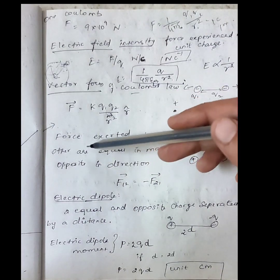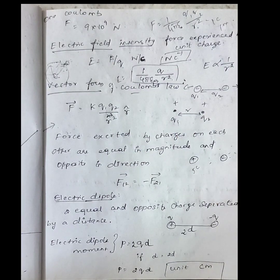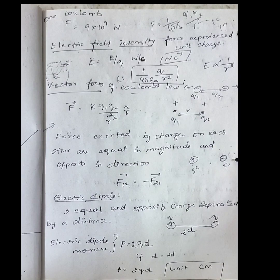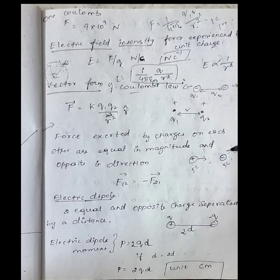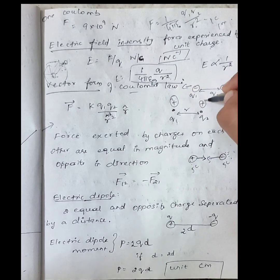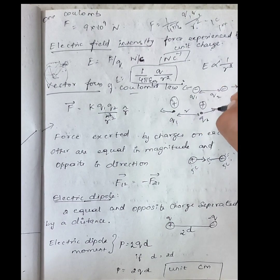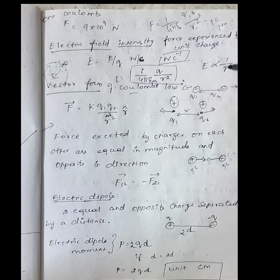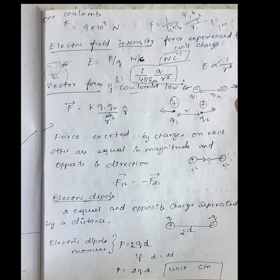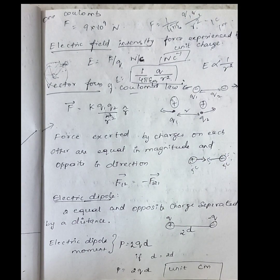The forces excited by a charge on each other are equal in magnitude and opposite in direction. For example, a 5-coulomb positive charge and another charge attract or repel with equal and opposite forces. So F₁₂ = −F₂₁: the magnitude is the same but the direction is opposite.